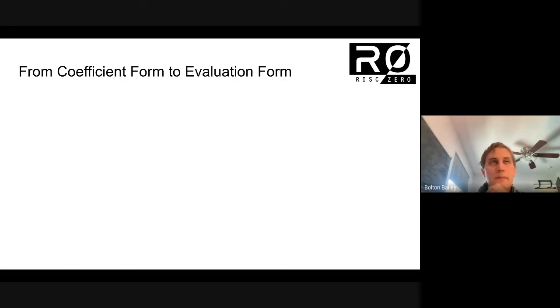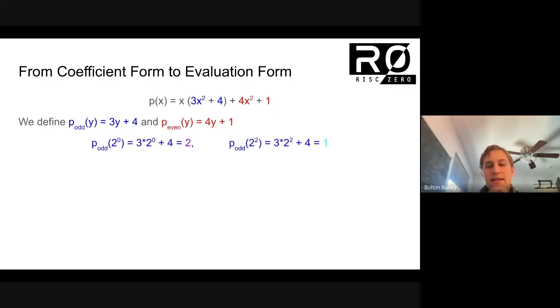So let's see how that works. We have p of x, we have our definitions for p odd and p even. And let's say that we have our evaluations for p odd on two to the zero and two squared. If we do the math on these, we get the values two for p odd on two to the zero and one for p odd on two squared. And similarly we can work that out for p even. We can evaluate p even on two to the zero squared and we get zero, and on two to the two squared we get two.